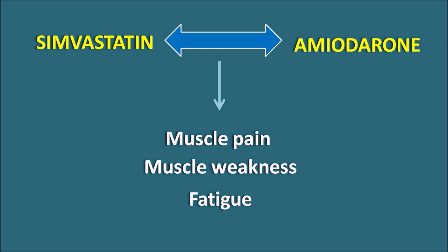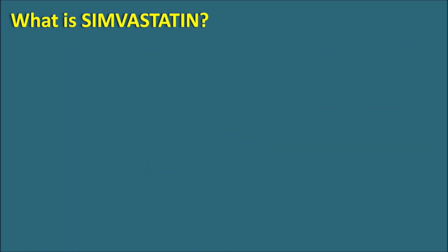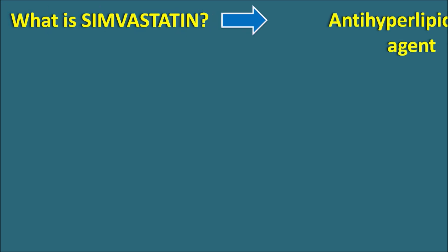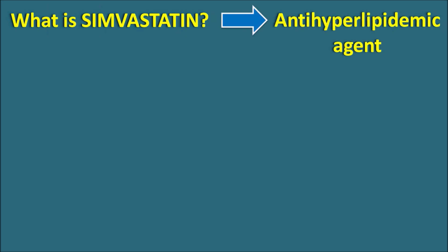But what is the mechanism underlying this drug interaction? Today in this video let us see how these drugs are going to interact and how we can eliminate this drug interaction. First of all, let us see what simvastatin is. Simvastatin is an anti-hyperlipidemic agent — we can observe this with the suffix '-vastatin' which indicates an anti-hyperlipidemic agent. Simvastatin is a prodrug which is going to be bioactivated.